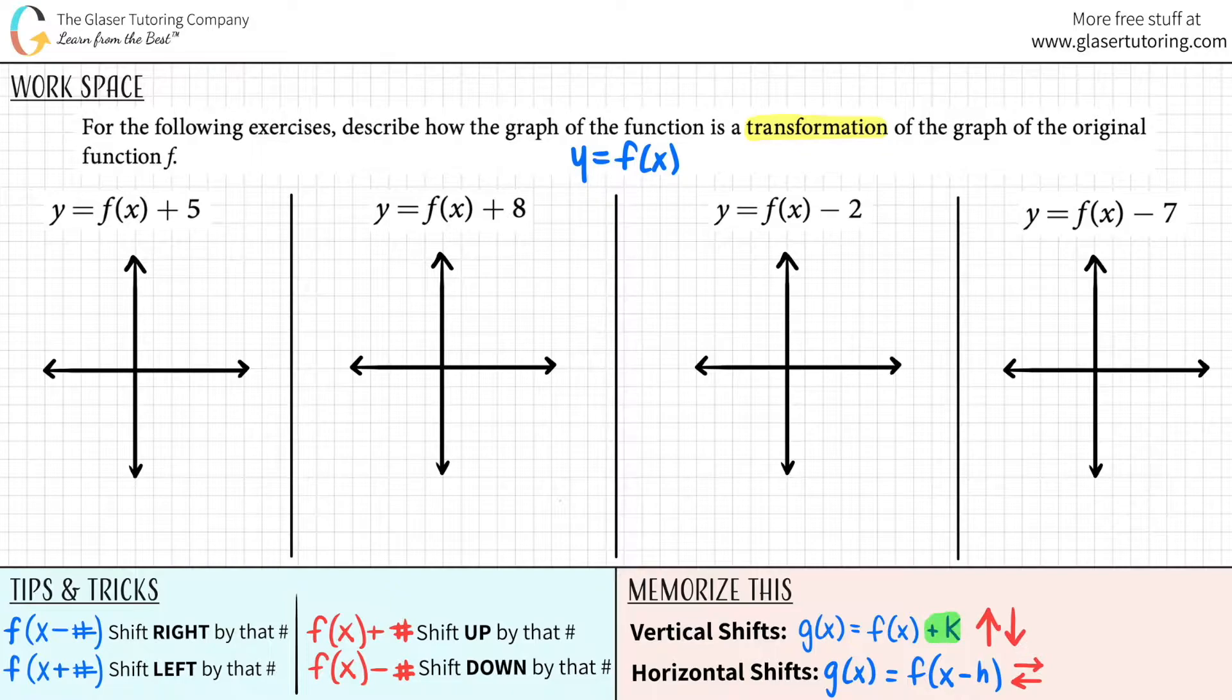For vertical shifts, you're always adding a number outside of the function. The function is kept intact, but then you have either plus a number or minus a number. For horizontal shifts, you are literally changing the inside of the function as a whole. You see how this is inside, the changes inside. So it would have to be something inside of the parentheses.